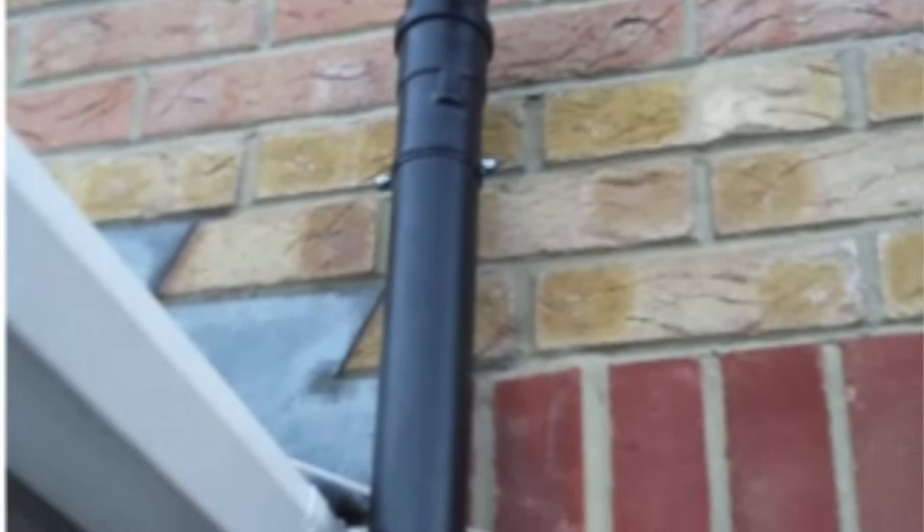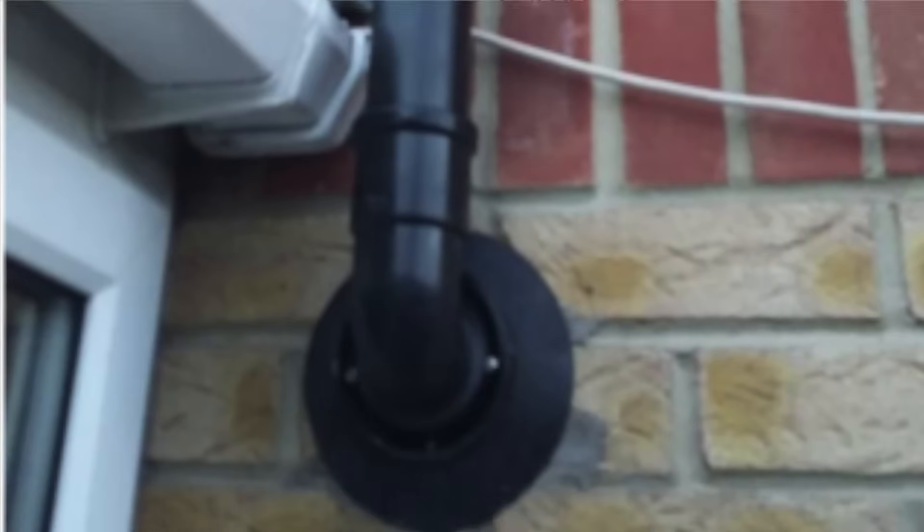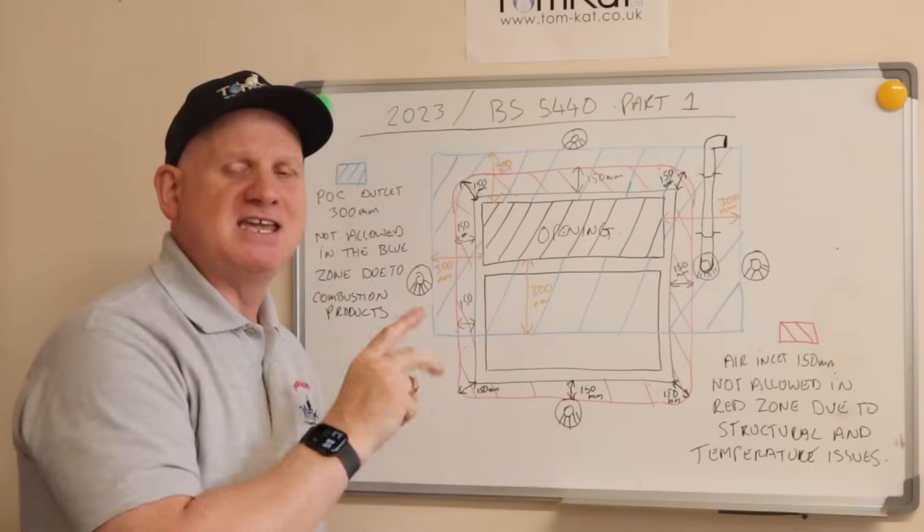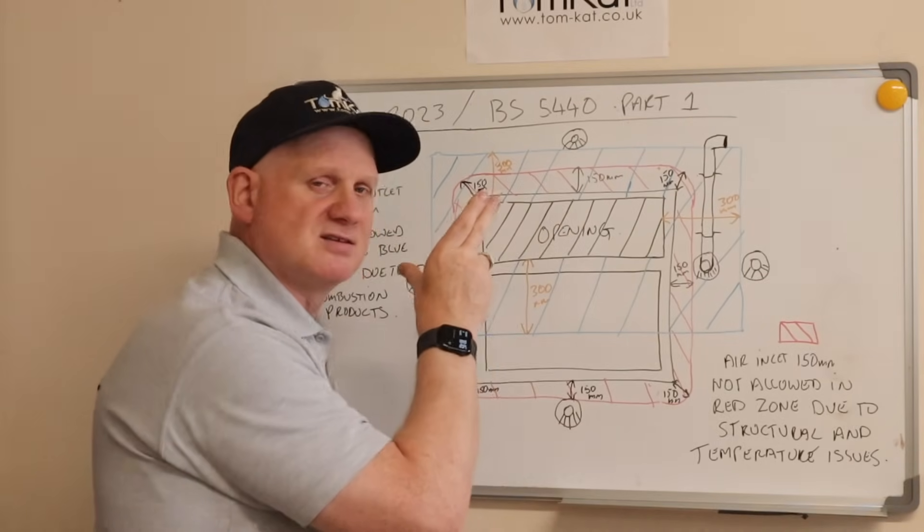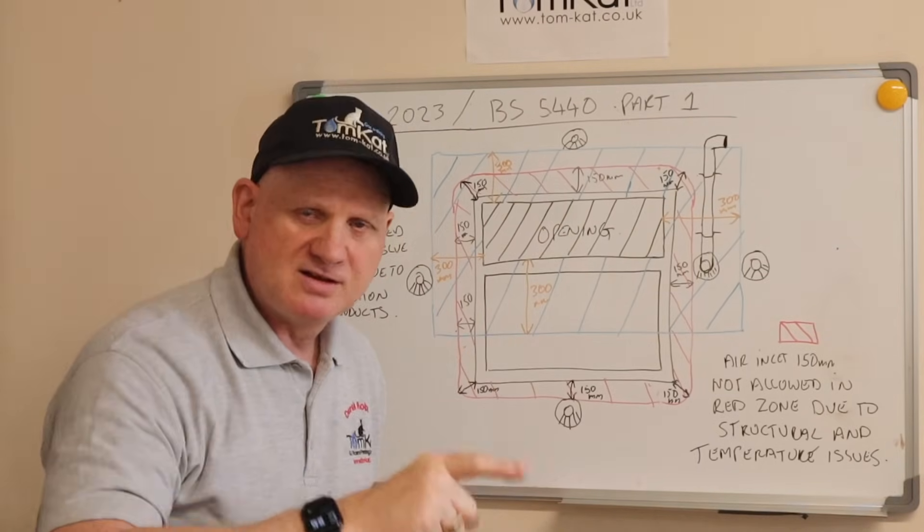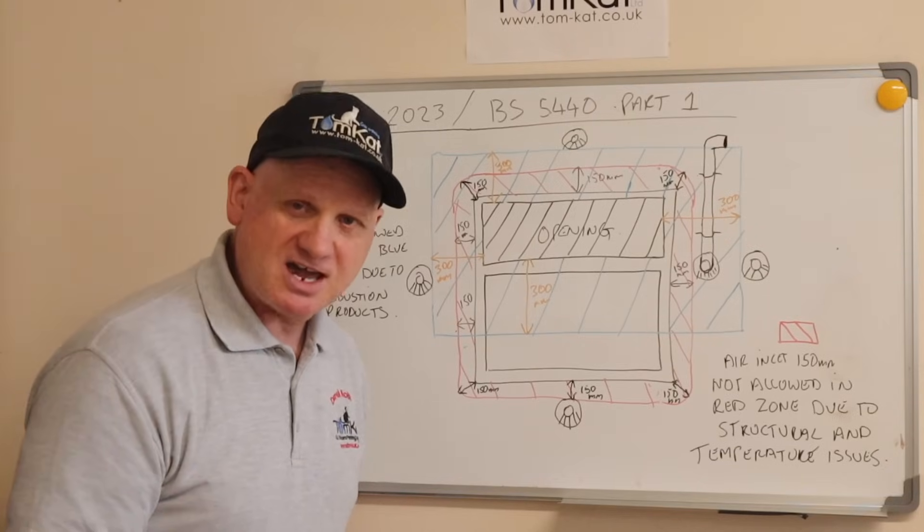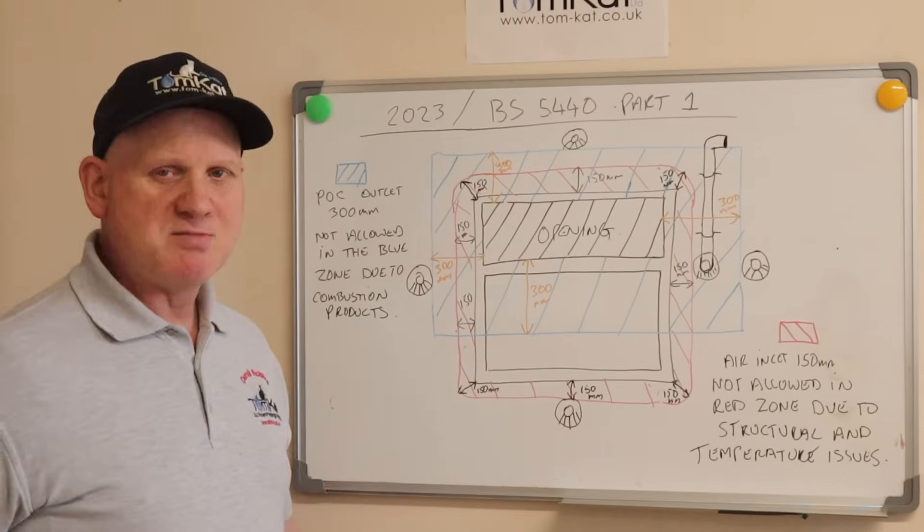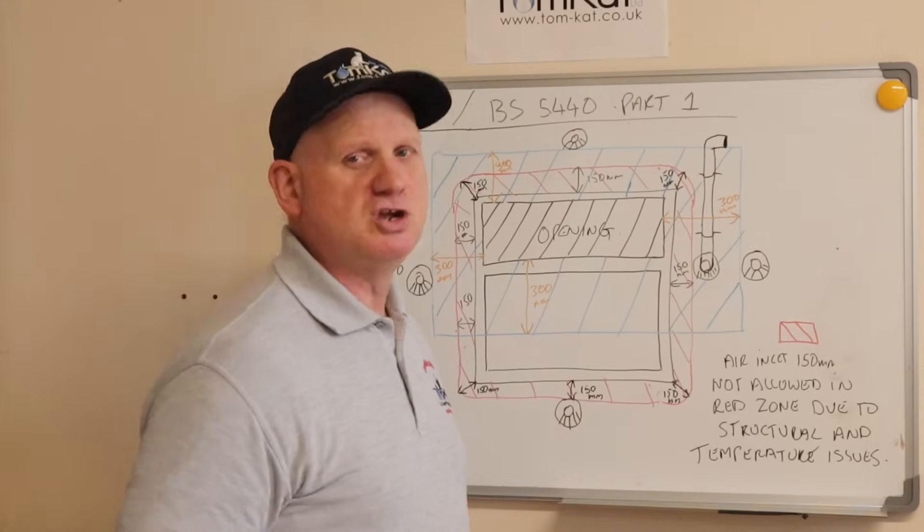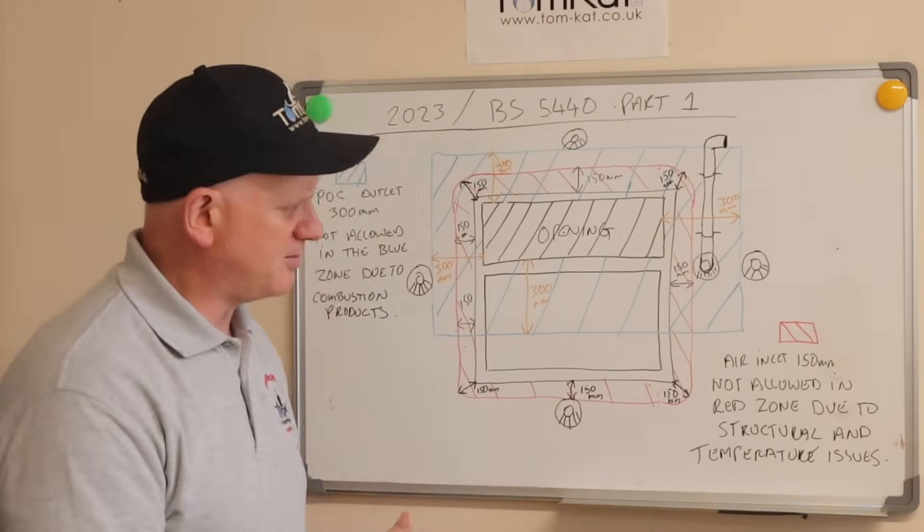Now the reason why BS 5440 says away from the frame from this one is this little statement here, where it says air inlet 150mm not allowed in the red zone due to structural and temperature issues. Because not every boiler allows you to do this, most of them do, but not all of them.